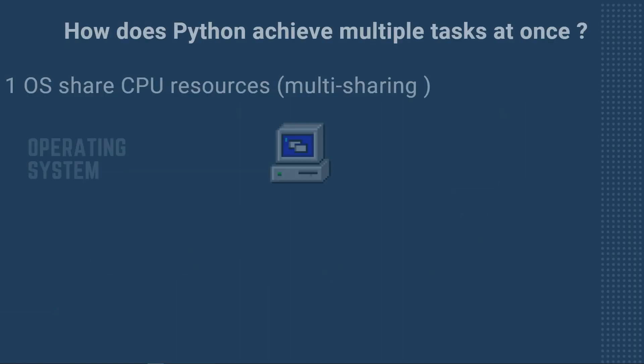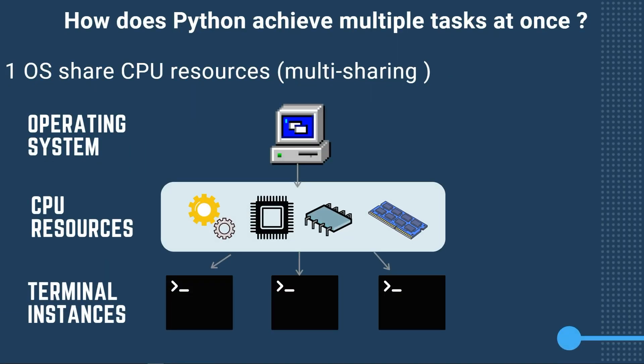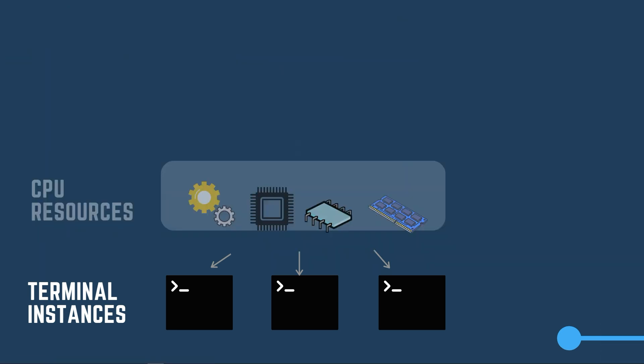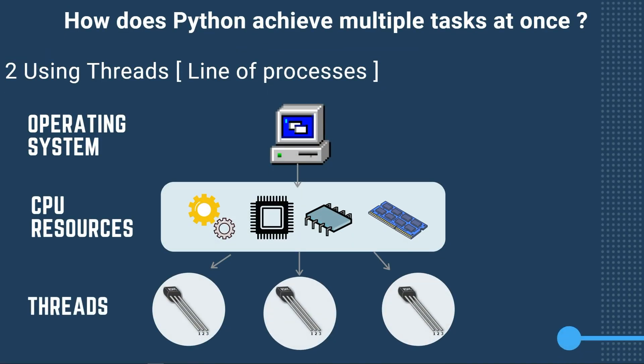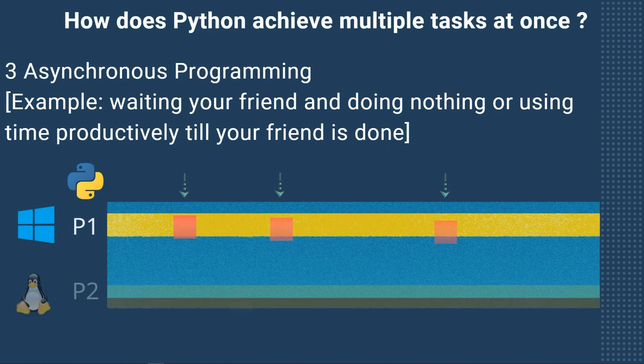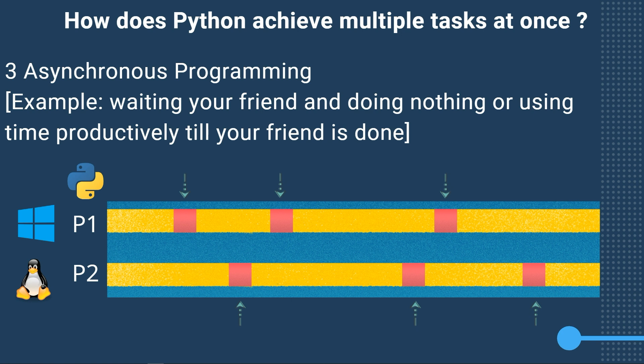How does Python achieve multiple tasks at once? First, the operating system uses multitasking — you can run multiple terminal instances concurrently and the OS shares CPU resources among them. Another way is using threads: a thread is a line of execution for several instructions sharing common resources, and the OS shares CPU resources among those threads. The last way is asynchronous programming, which is what Tornado does, where the operating system has no direct role.